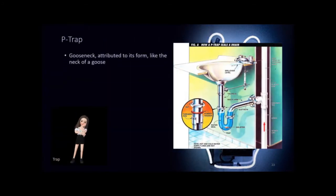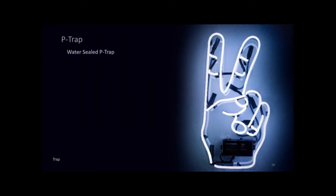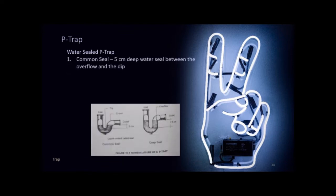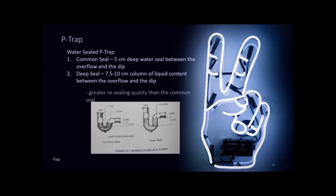Tests show that the most practical form ever developed is the P-trap. Originally called a gooseneck due to its form like the neck of a goose, it is the most common and acceptable type of trap. Its size ranges from 32 to 50 millimeters in diameter. The water-sealed P-trap is classified into two: the common seal, which has a 5 cm deep water seal, and the deep seal P-trap, which has 7.5 to 10 cm of liquid between the overflow and the dip. The deep seal is designed for abnormal situations such as extreme heat, changes in atmospheric conditions, and where total ventilation cannot be obtained.